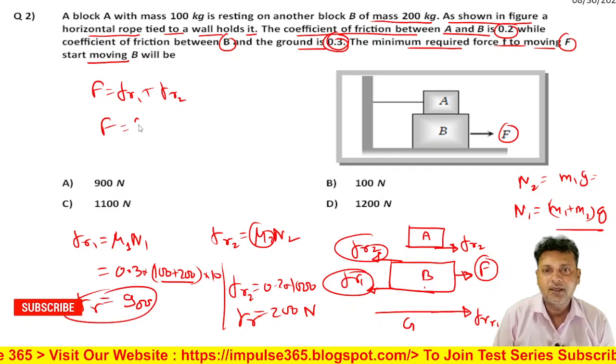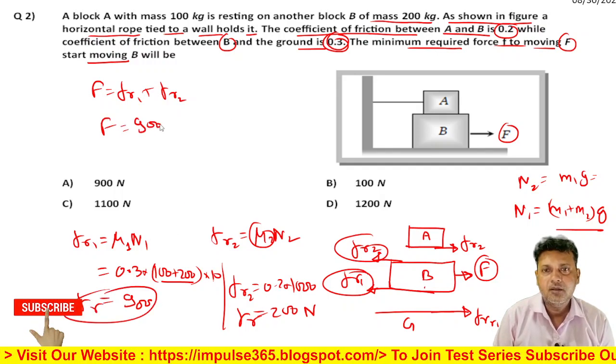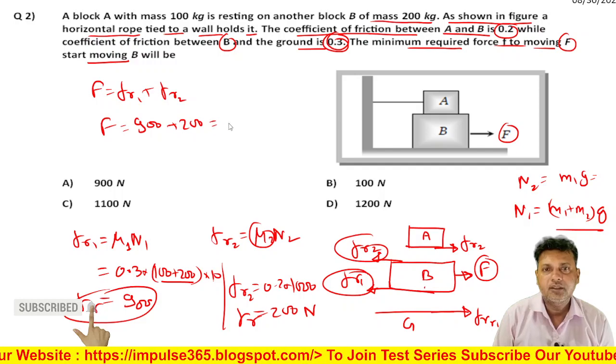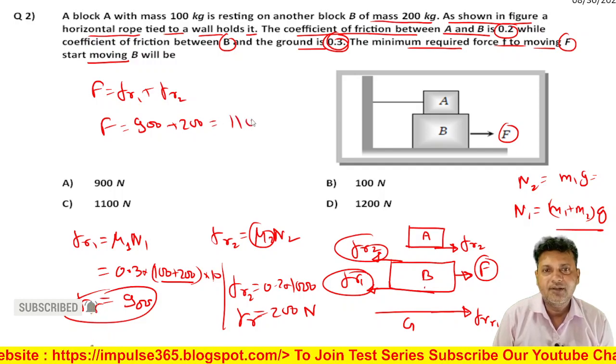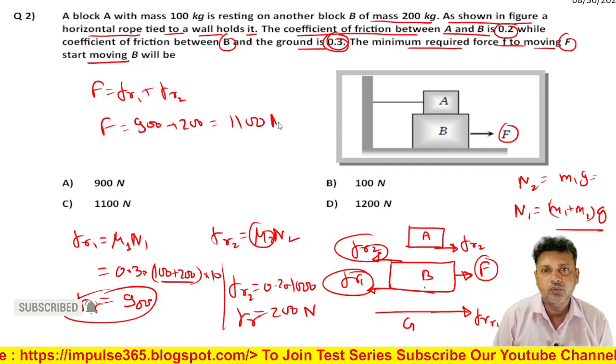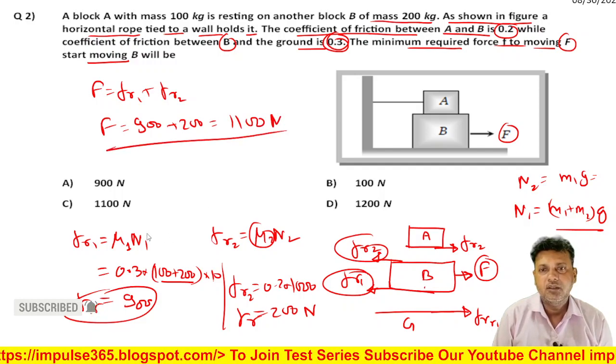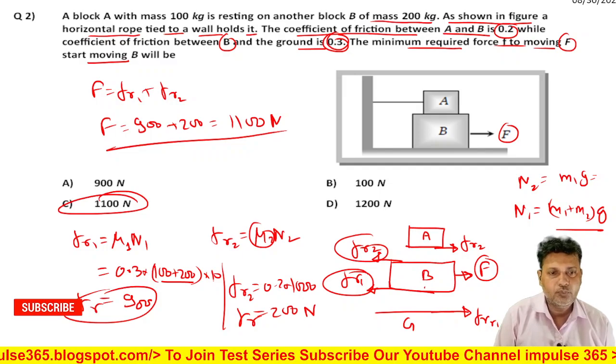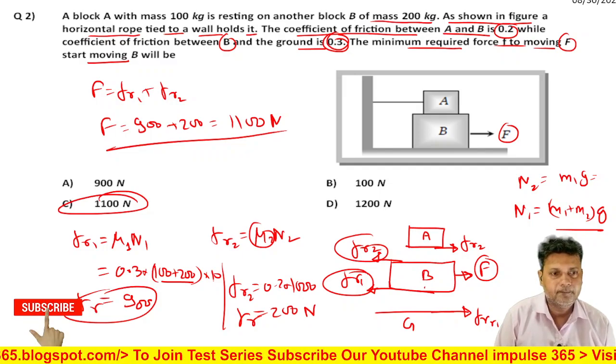तो दोनों का sum कितना होगा? FR1 + FR2 = 900 + 200 = 1100 N। यह आपका answer है - Option C सबसे appropriate है।